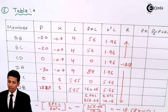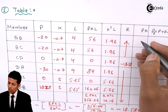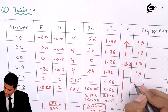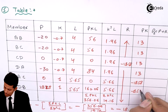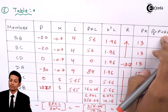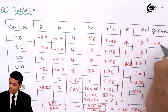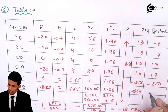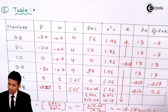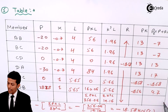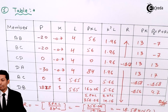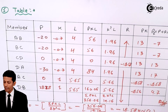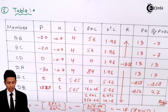Now compute R times K for each member: minus 18.58 into k gives values of 13, 13, 13, 13, 13, and minus 18.58 for the respective members. The final member forces PF equals P plus RK, giving results of minus 7, minus 7, 13, 17, minus 18.58, and 9.7 kN respectively. These are the final forces in all members.